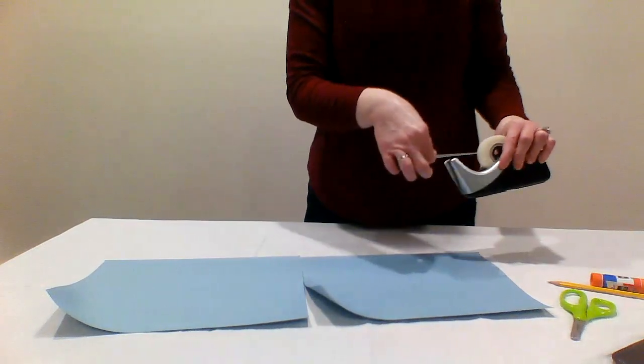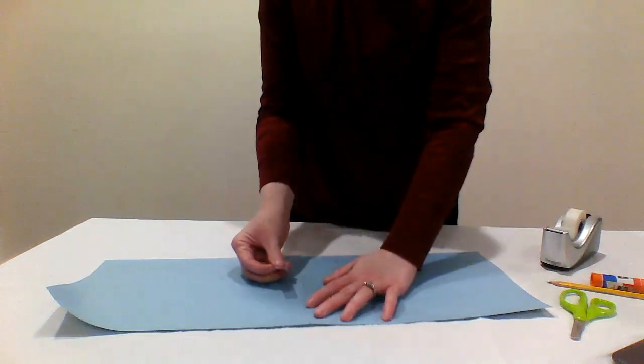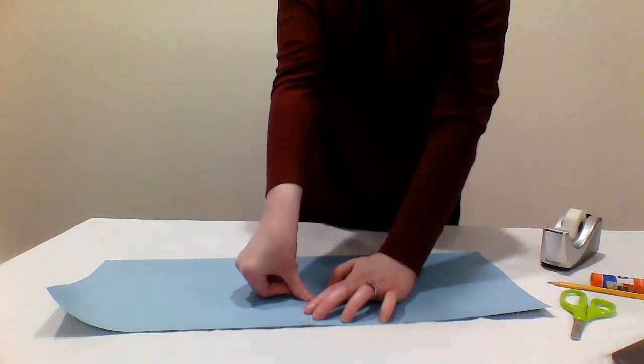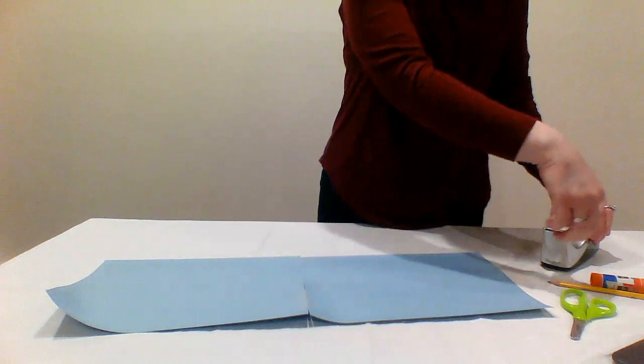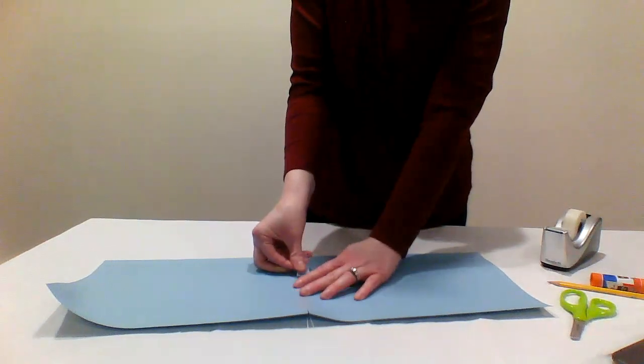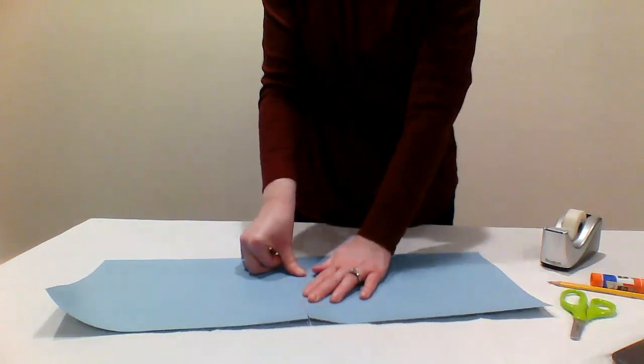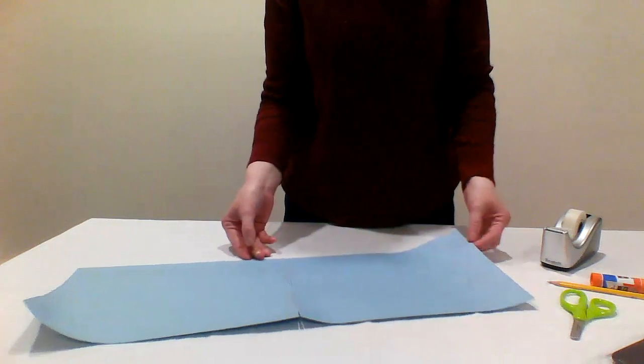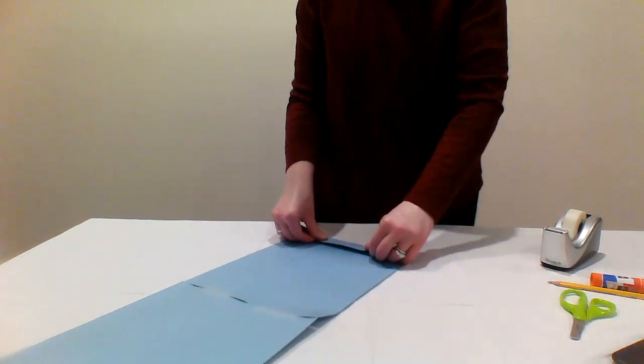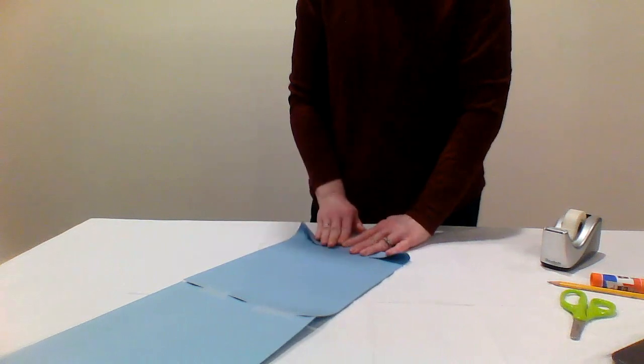Put the two pieces of construction paper flat on the table next to each other. Tape the ends of the pieces of paper together. Now fold the paper in an accordion or paper fan shape.